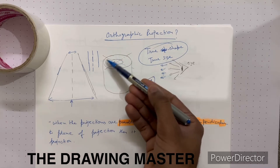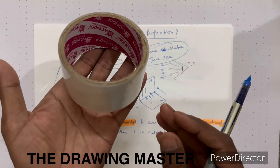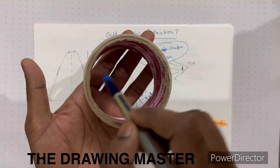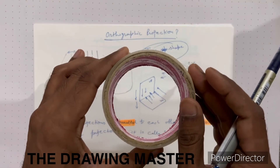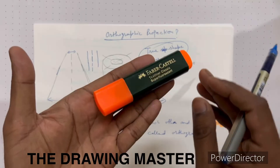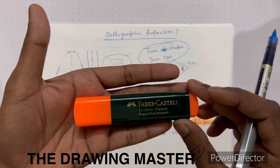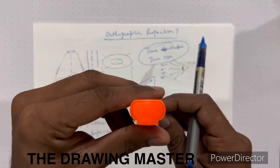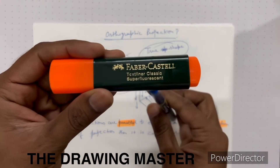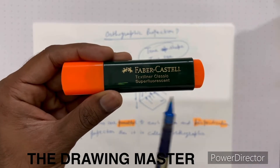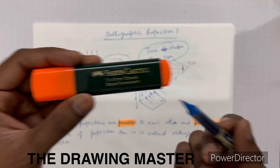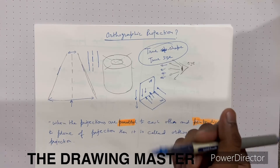For example, if a cylinder is placed on a table, you will see an elliptical shape. But if you see exactly from the top, it is a perfect circle — that is the true shape. There are six principal directions from which you can see an object: top, bottom, front, rear, right side, and left side.